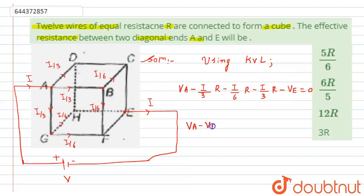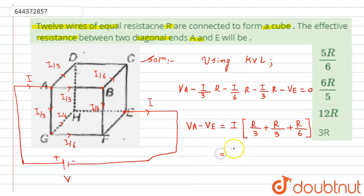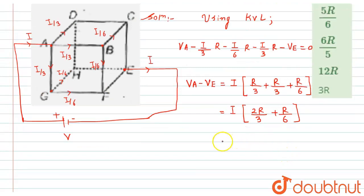From here we get V_A minus V_E equals, taking all three terms to the other side and factoring out i: i times (R/3 + R/3 + R/6). Simplifying: i times (2R/3 + R/6), which further simplifies to i times 5R/6.